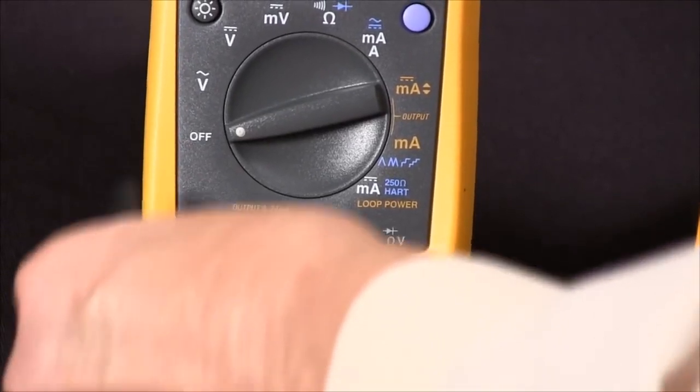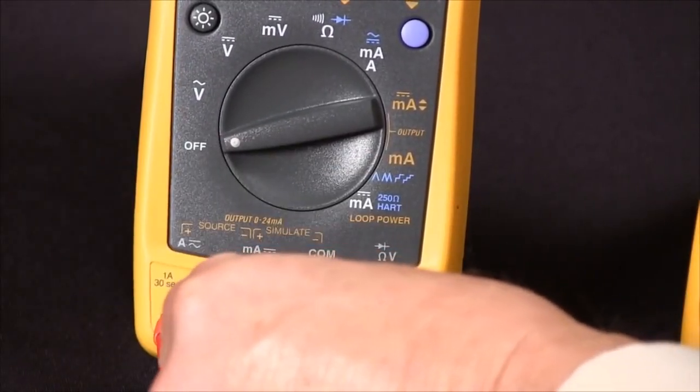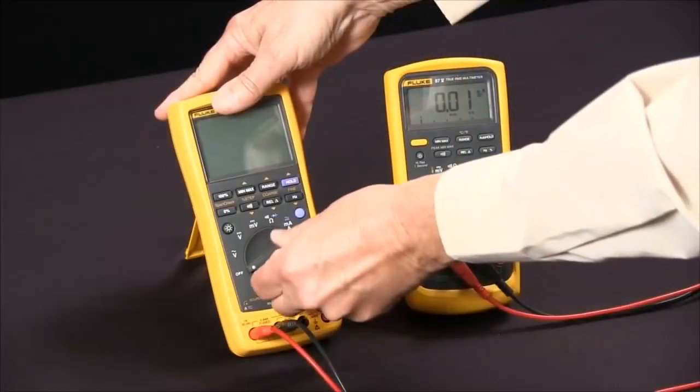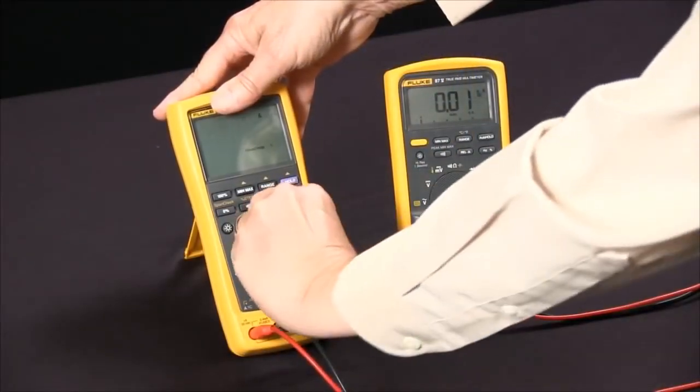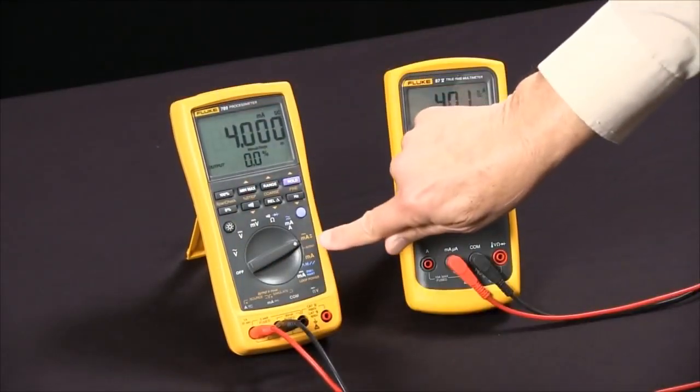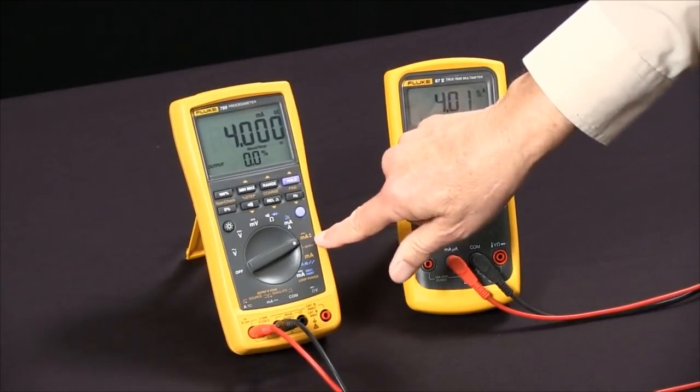Then we'll rotate the rotary knob over to the DC milliamp position, and from this point we have several choices to control it.